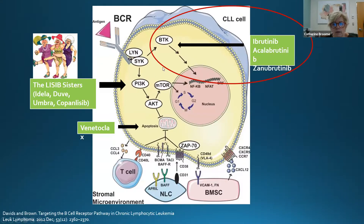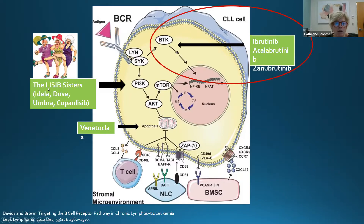The CLL microenvironment and targeted agents: BTK inhibitors — ibrutinib, acalabrutinib, and zanabrutinib — affect Bruton tyrosine kinase signaling within the cell. Venetoclax affects apoptosis via BCL2 inhibition. PI3 kinase inhibitors — copanlisib, idelalisib, and umbralisib — affect the PI3 kinase pathway.